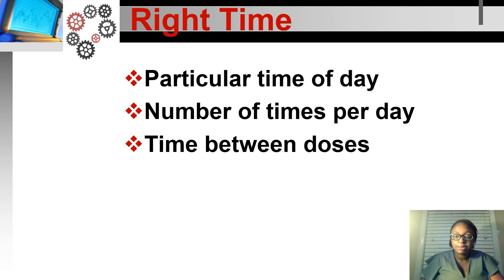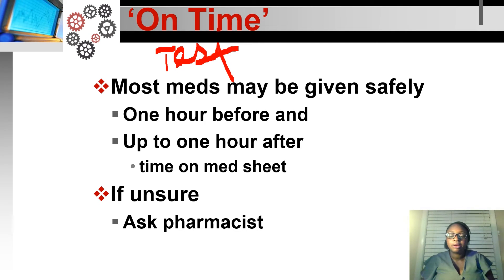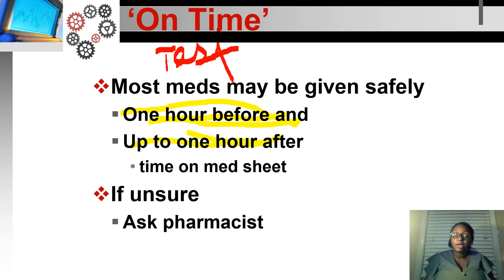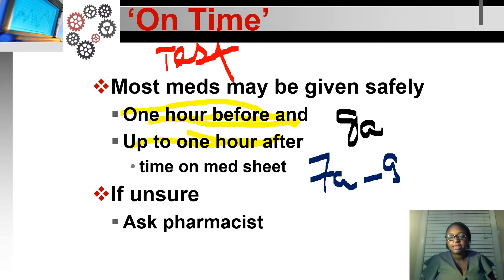For the right time: there's a particular time of day, number of times per day, and time between doses — twice a day, daily, bedtime, three times a day, four times a day. This is a test question: most meds may be given safely one hour before or one hour after the scheduled time. So for an 8 a.m. med, you have a window from 7 a.m. to 9 a.m.